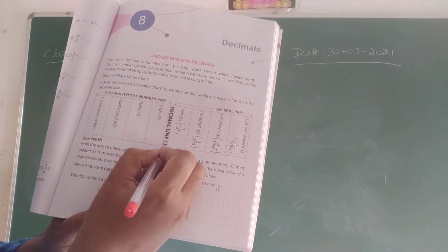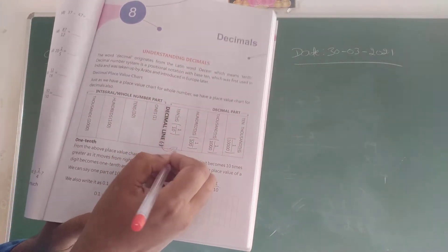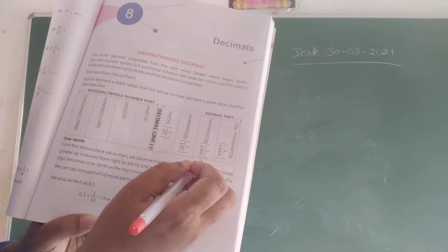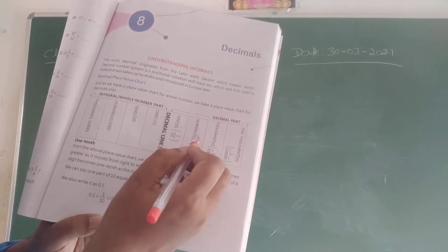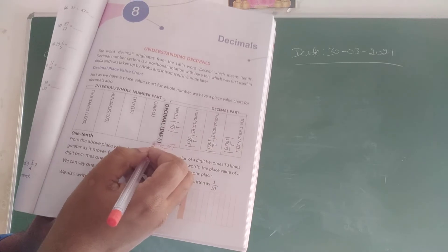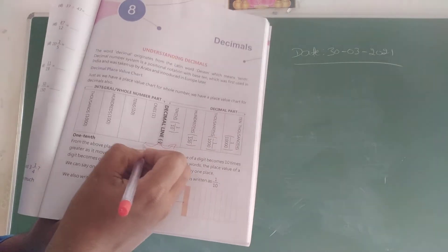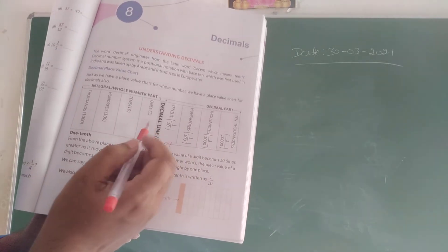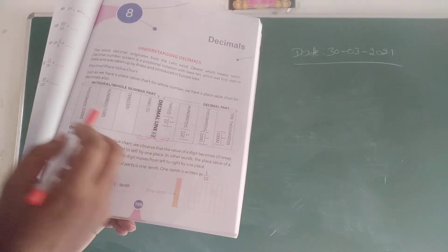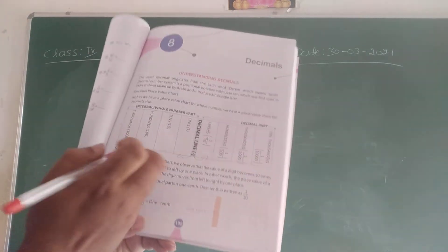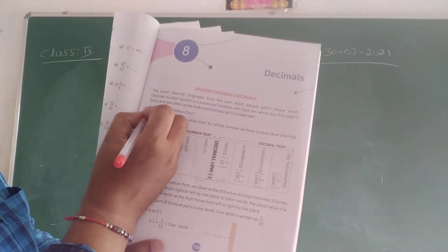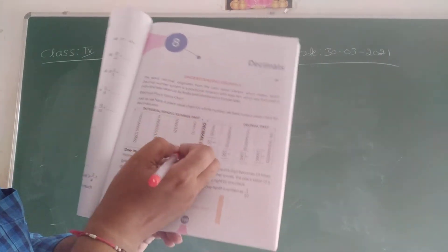After the decimal point, the digits are called as tenths, hundredths, thousandths, ten-thousandths. And before the decimal point, the digits are called as ones, tens, hundreds, thousands. You have to write these things in your classwork.